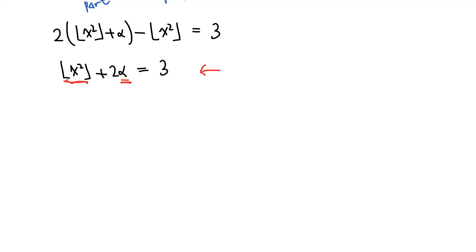So between these two, we actually solve for alpha, and that gives us alpha equals 3 minus floor x squared over 2.